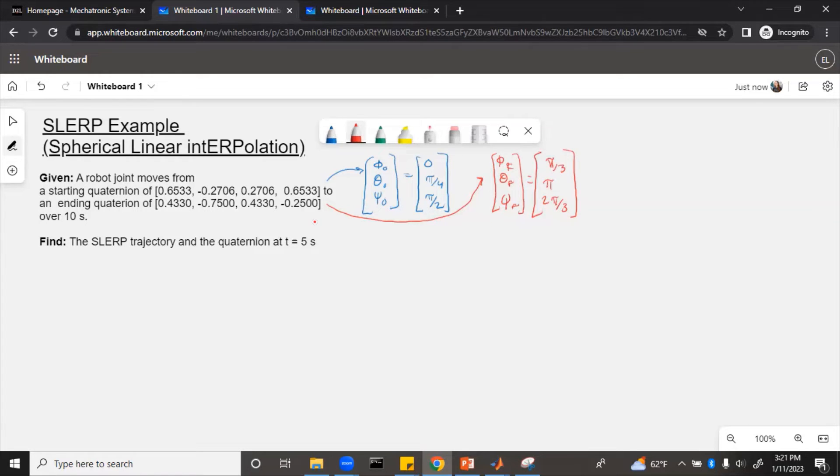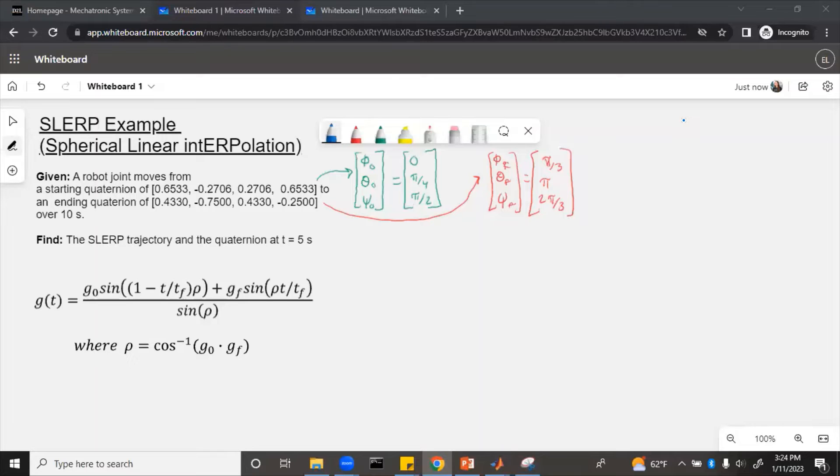The first thing that we need to do is get our formulas, and then we can calculate rho, and then we can calculate the quaternion trajectory, and then finally we'll plug in t equals five seconds to find the actual value of the quaternion. Here are the formulas, and the first thing we need to do is find the dot product of g initial and g final so that we can calculate rho.